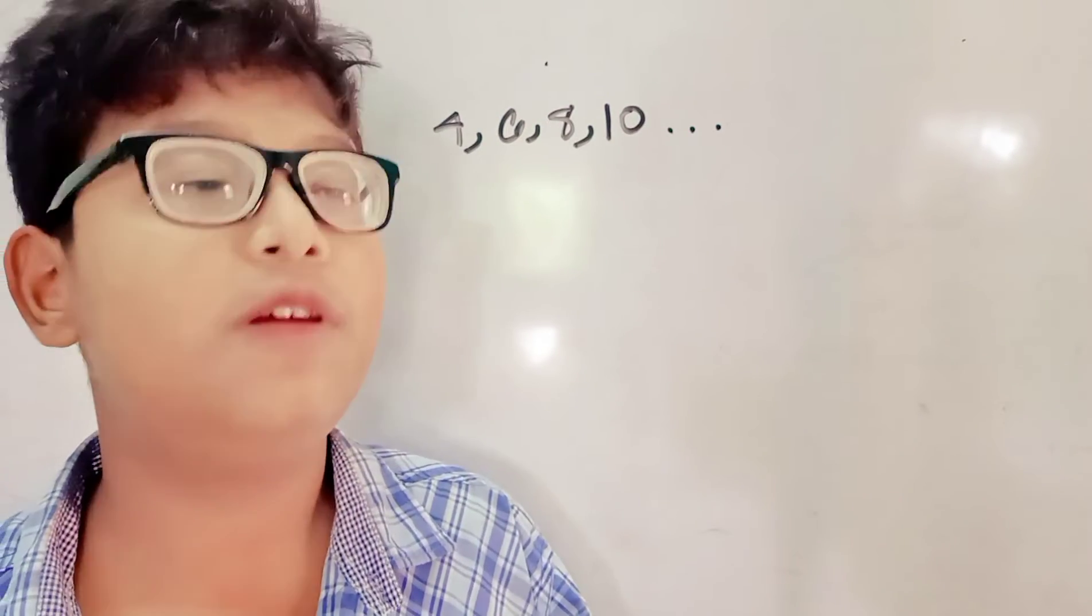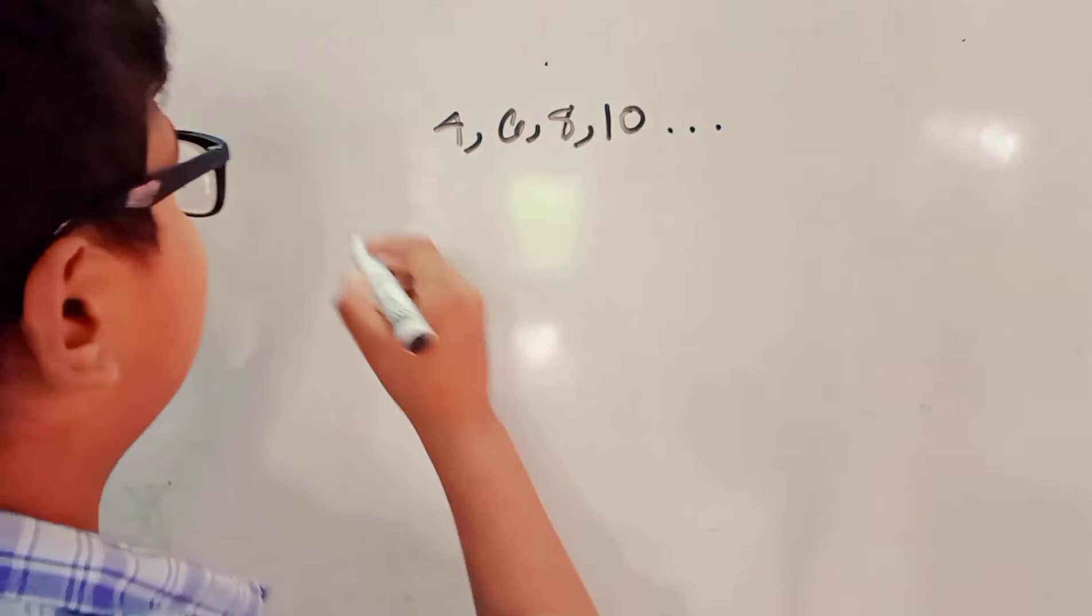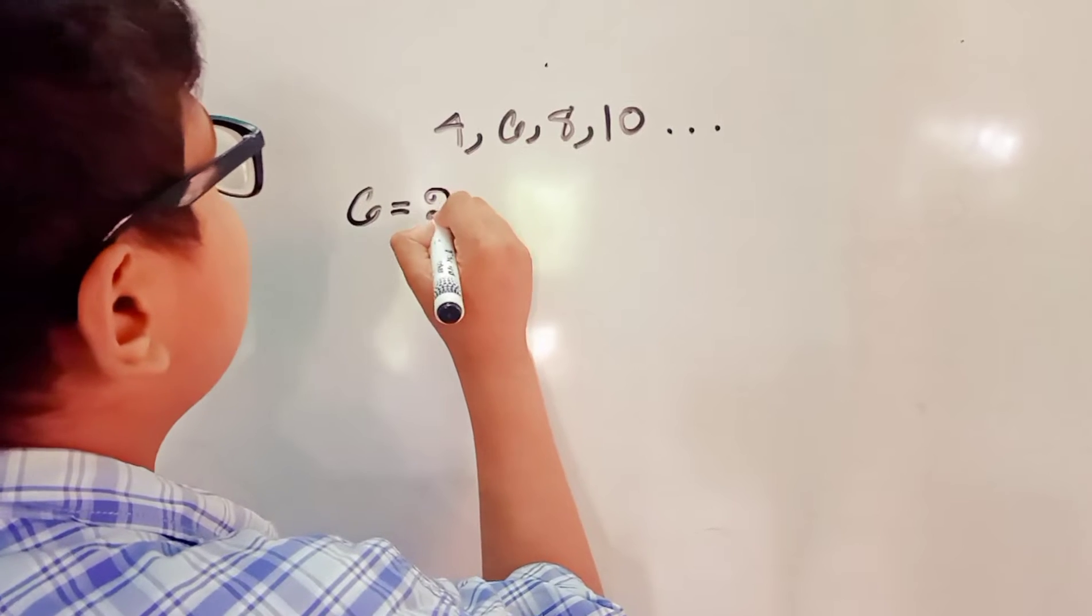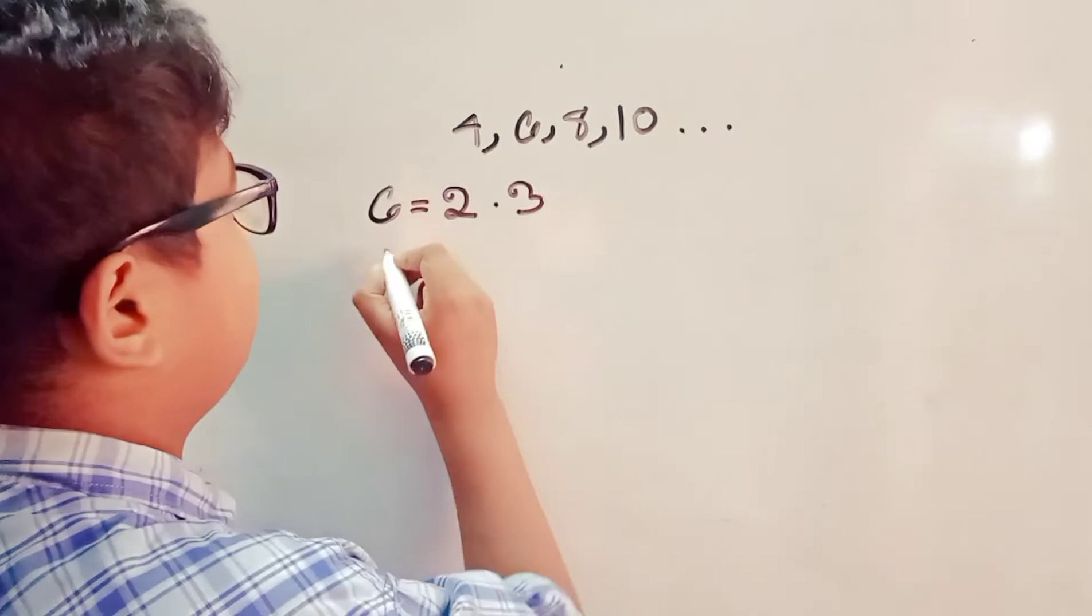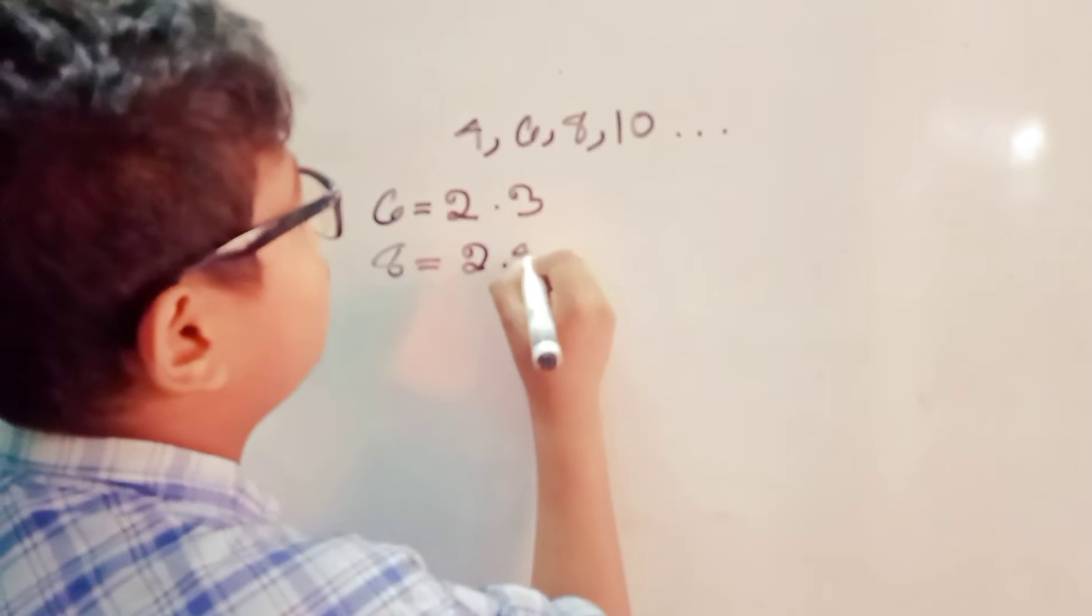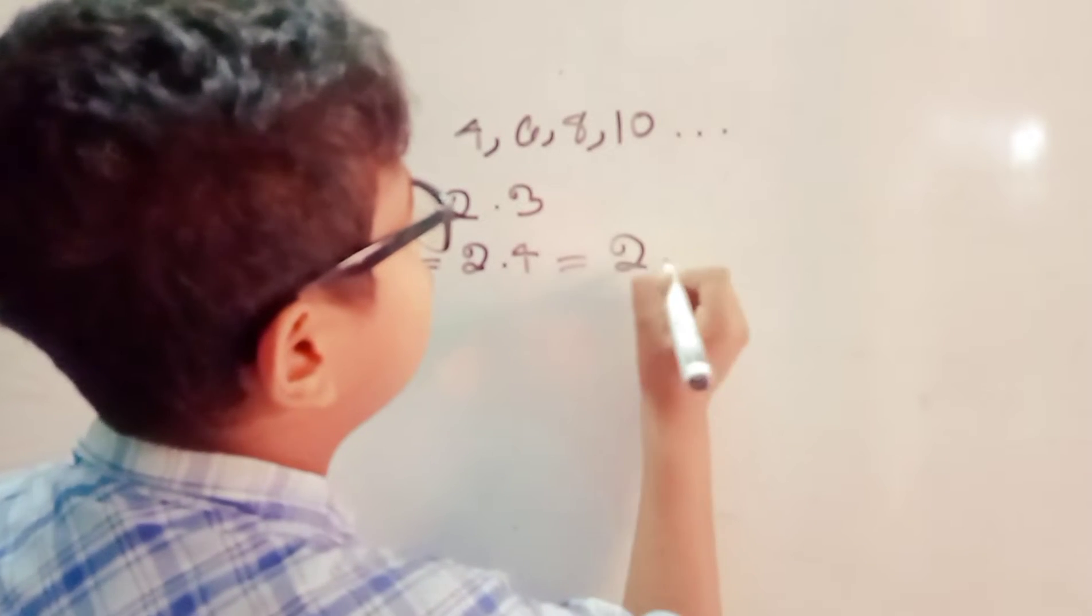For example, 6 equals 2 into 3, 8 equals 2 into 4, equals 2 into 2.